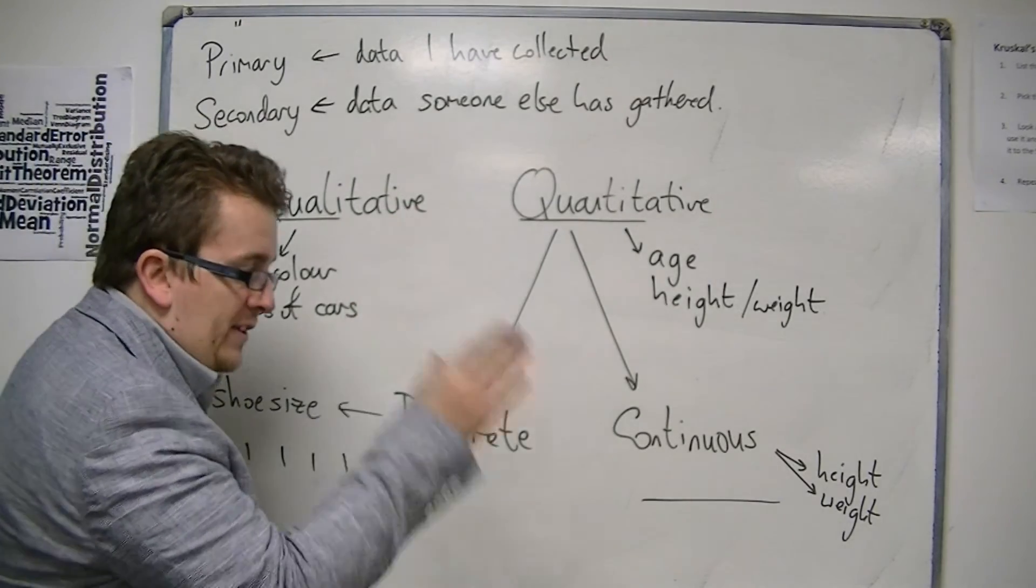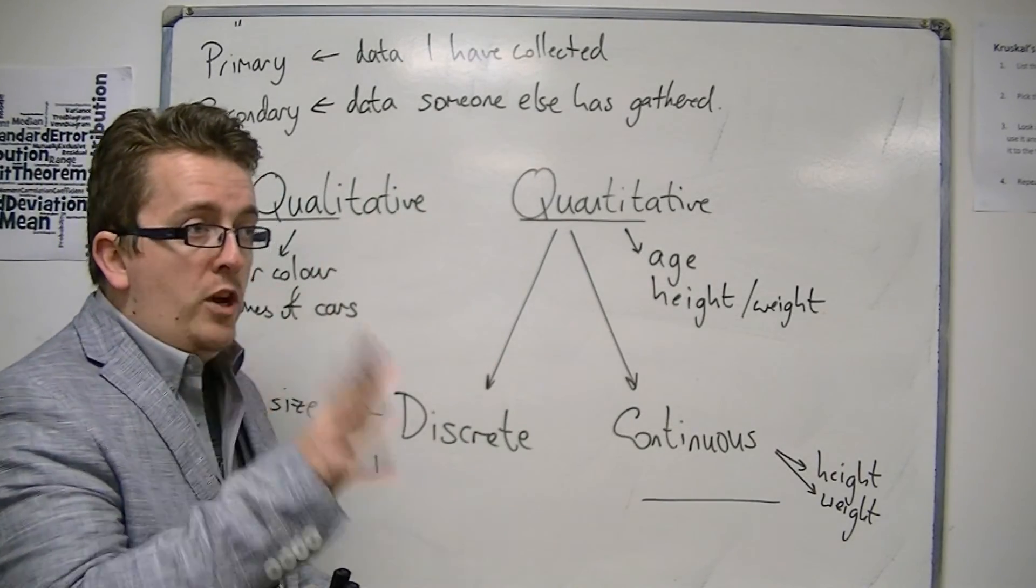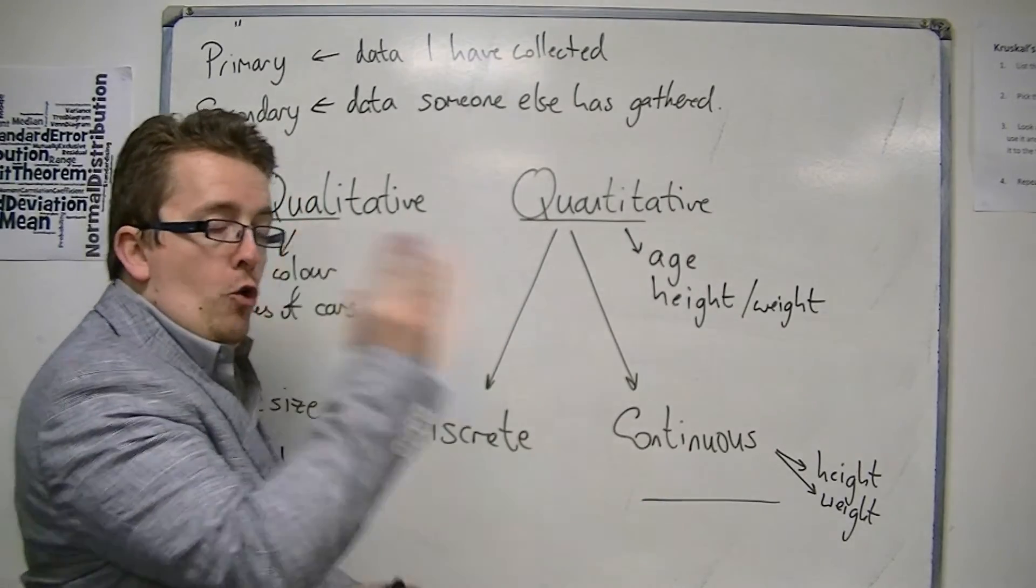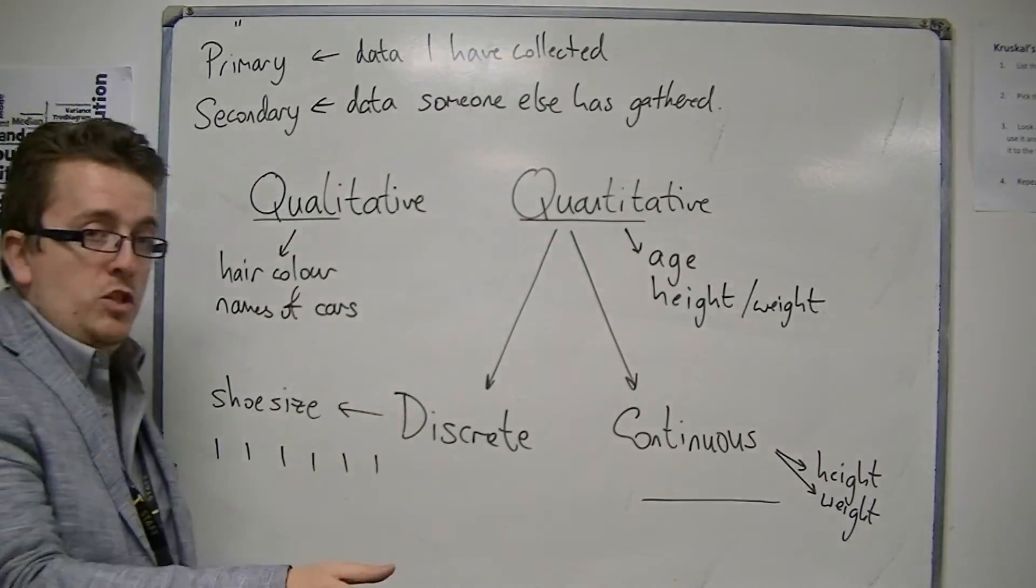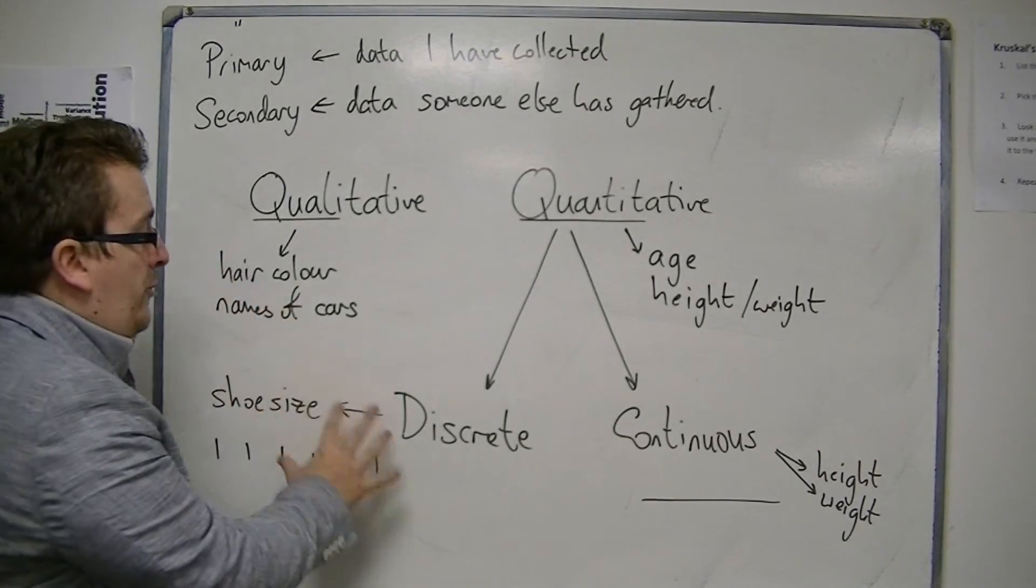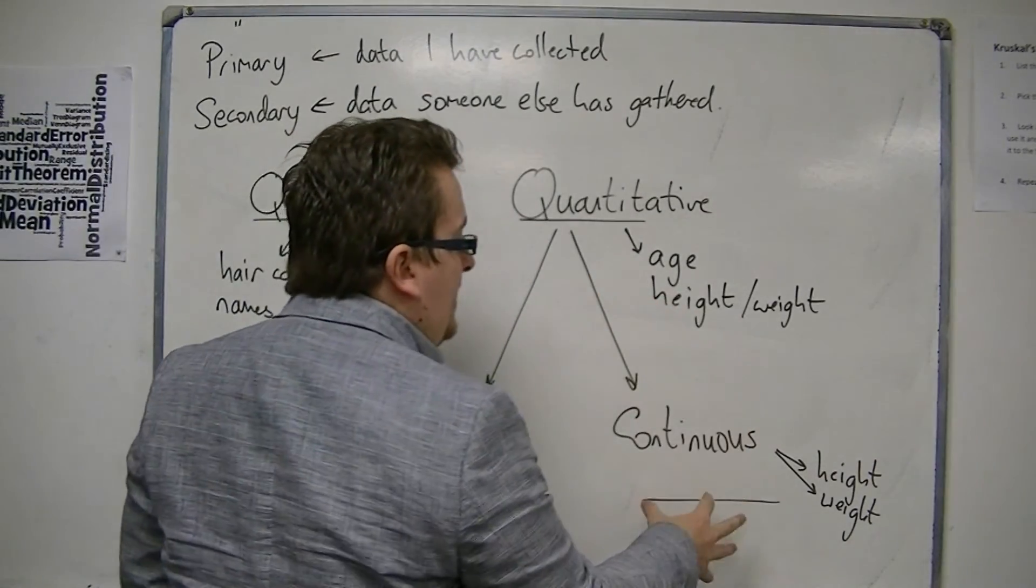They're not just in distinct groups. You're not just either 124 centimeters or 125 centimeters. You can be between. And that is the difference between discrete data and continuous data.